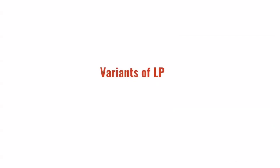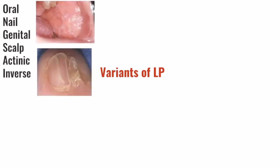There are multiple variants of lichen planus, and these can be thought of in broad categories. Based on their location, these include lichen planus in the oral cavity, lichen planus involving the nails, the genitals, scalp, sun-exposed areas — known as actinic lichen planus — as well as flexural inverse areas such as the armpit and groin folds, which is known as inverse lichen planus.